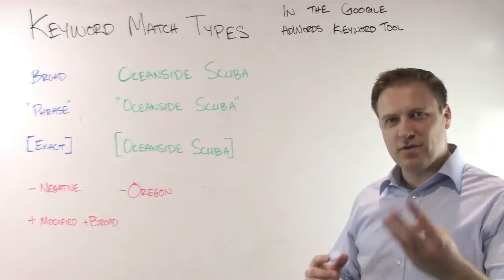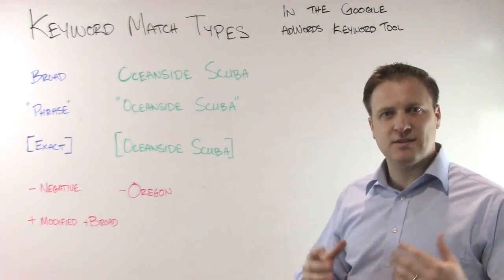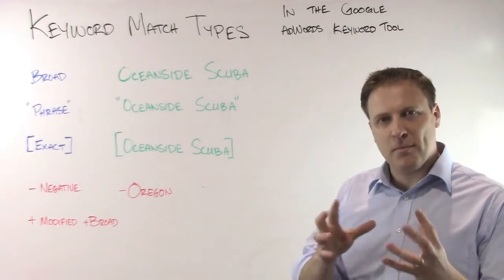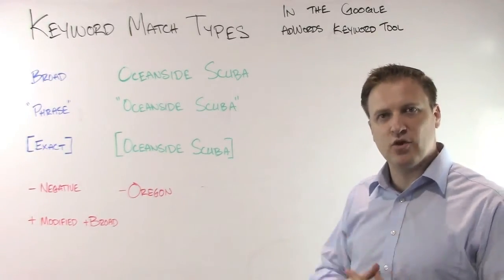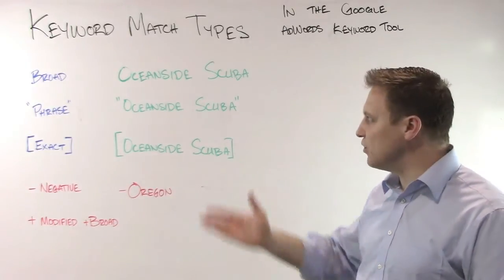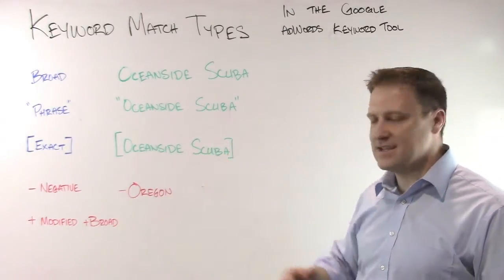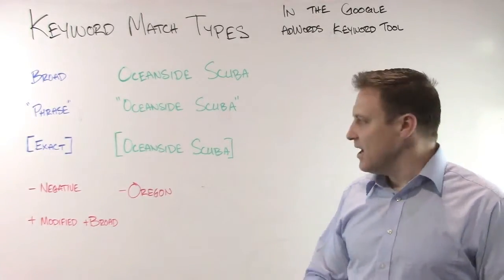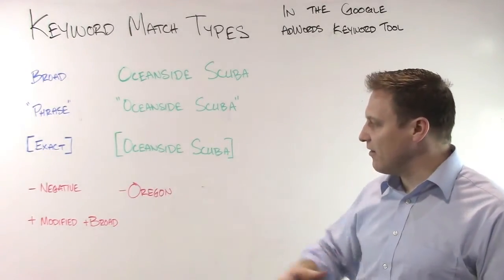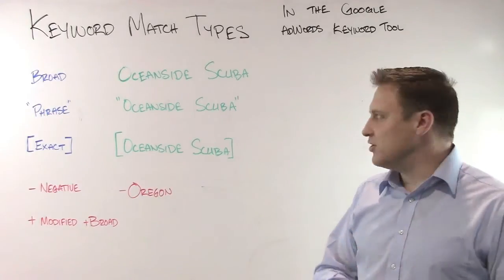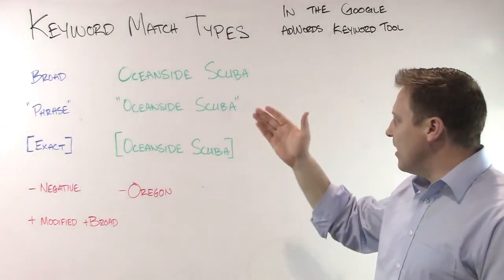Basically you've got three different match types within the Google AdWords keyword tool. You have broad, phrase, and exact — and we'll get into what negative and modified broad match are in just a moment.